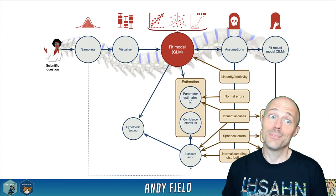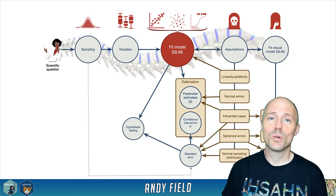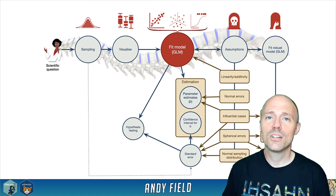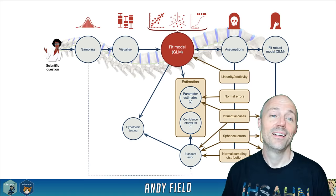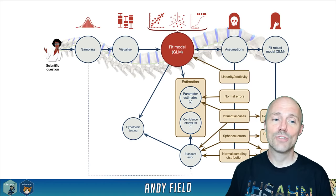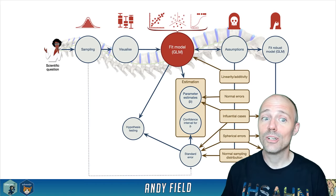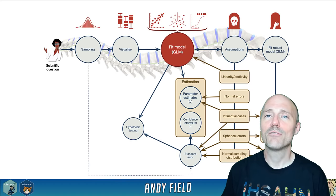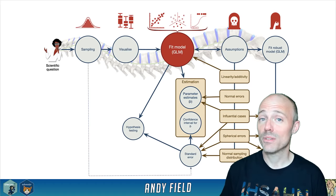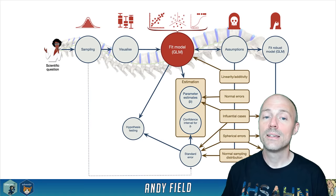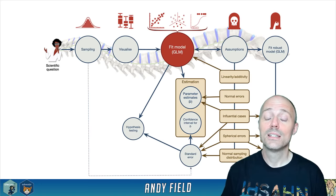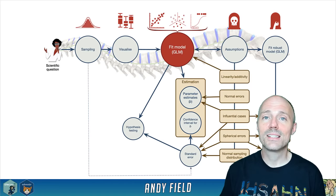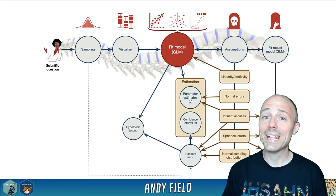We've talked in pretty much every previous lecture about the process of fitting models and answering scientific questions. We start off with a question, sample some data using a research design that addresses the question, visualize those data, then fit a model. That statistical model should represent the hypotheses we were originally interested in testing. When we fit a model we estimate parameters — either a point estimate, a confidence interval, or an interval estimate.